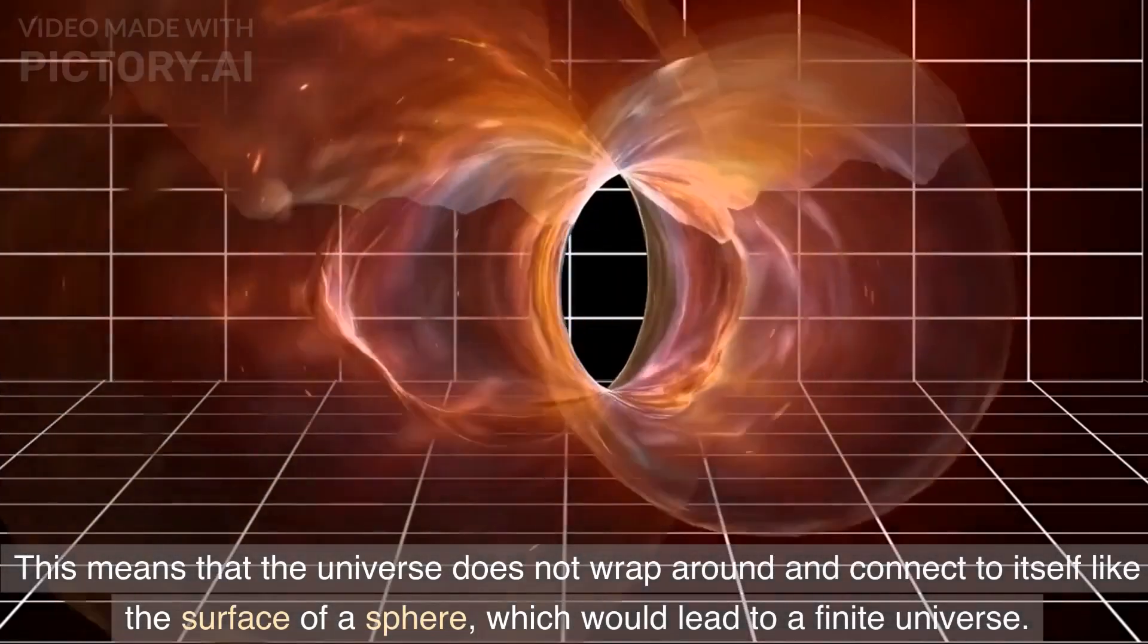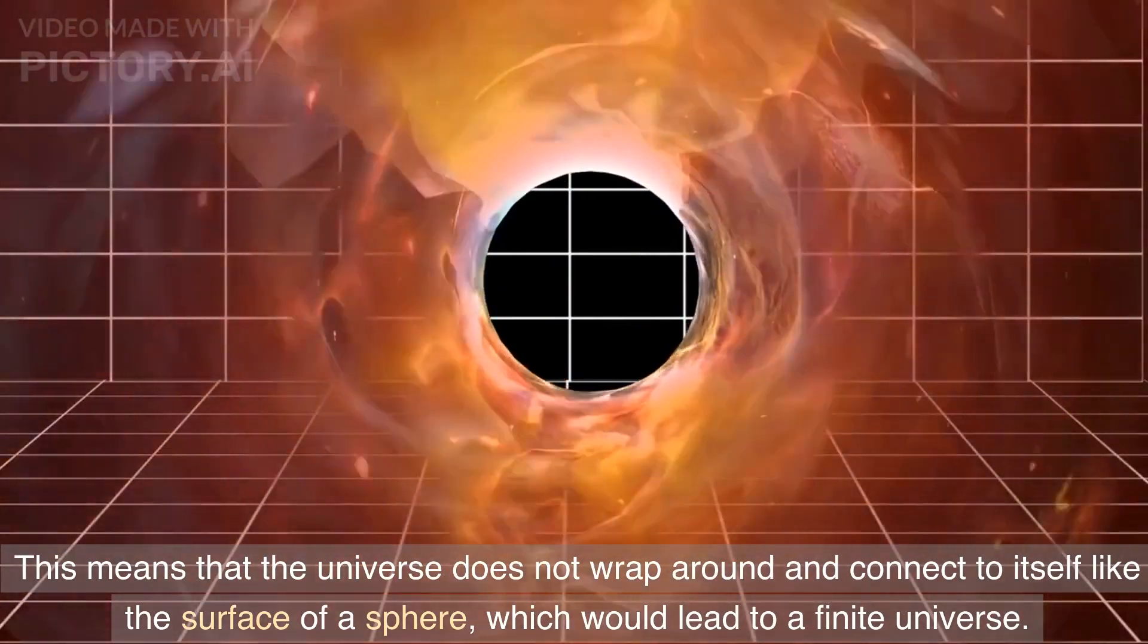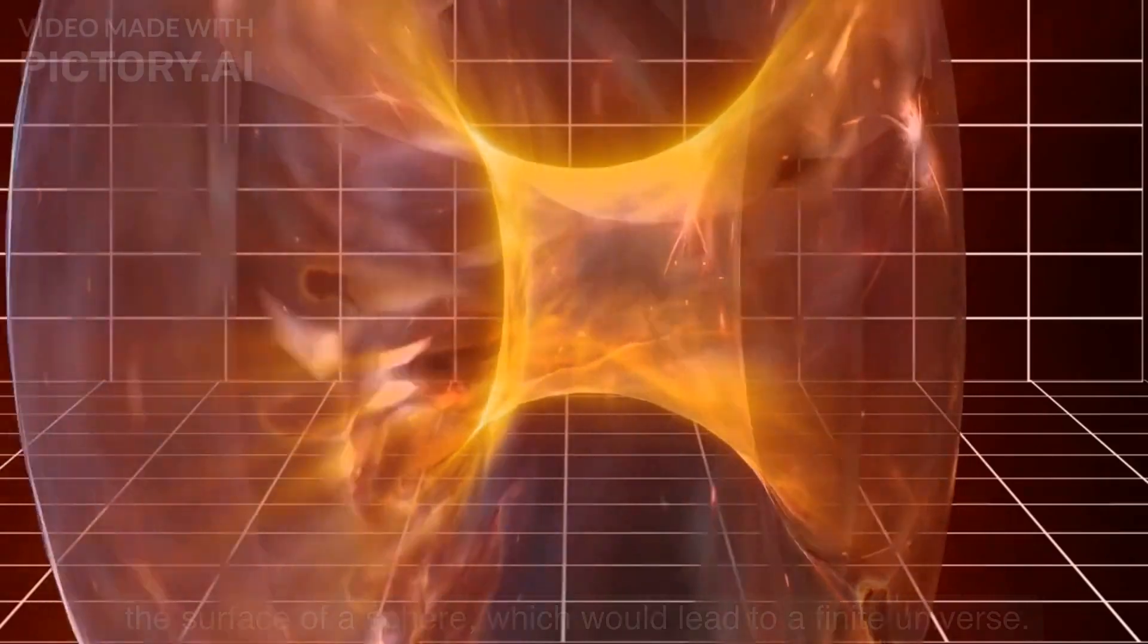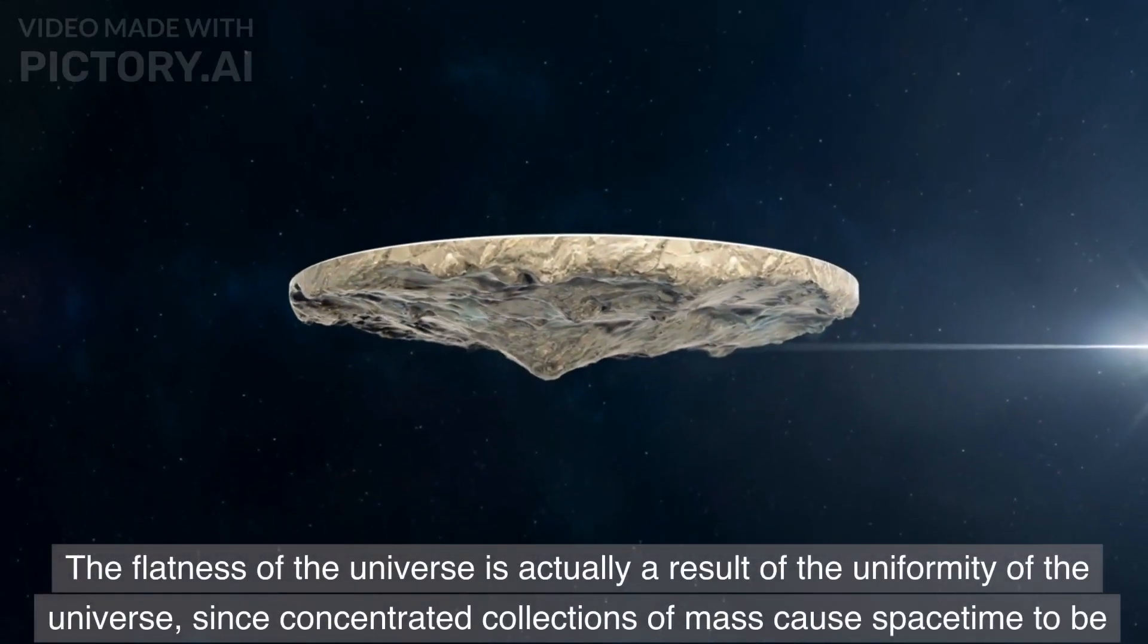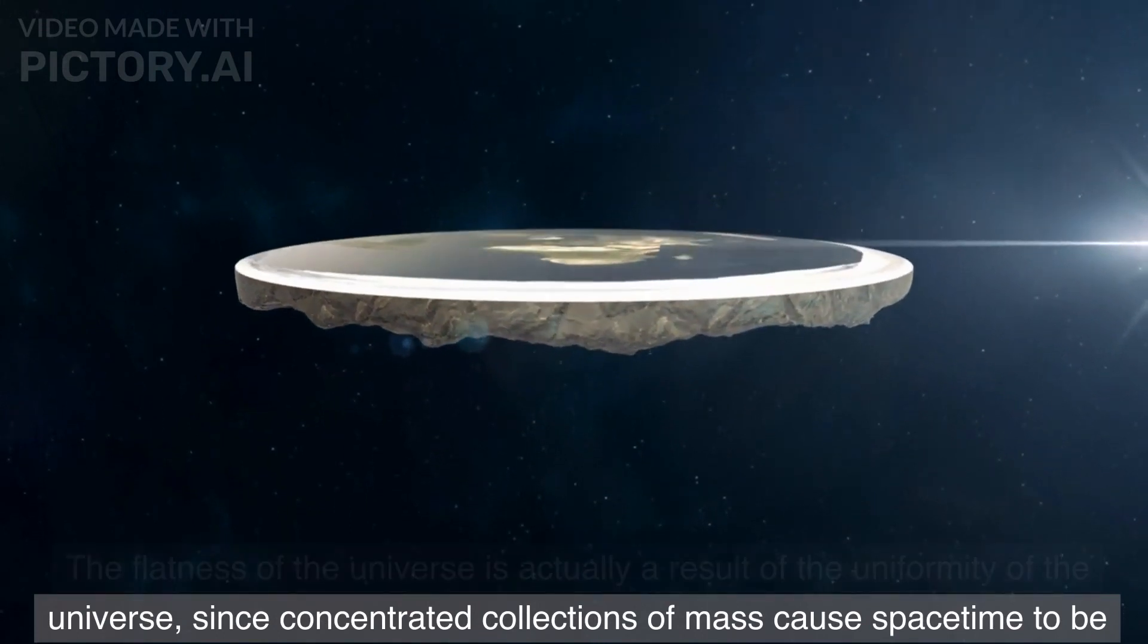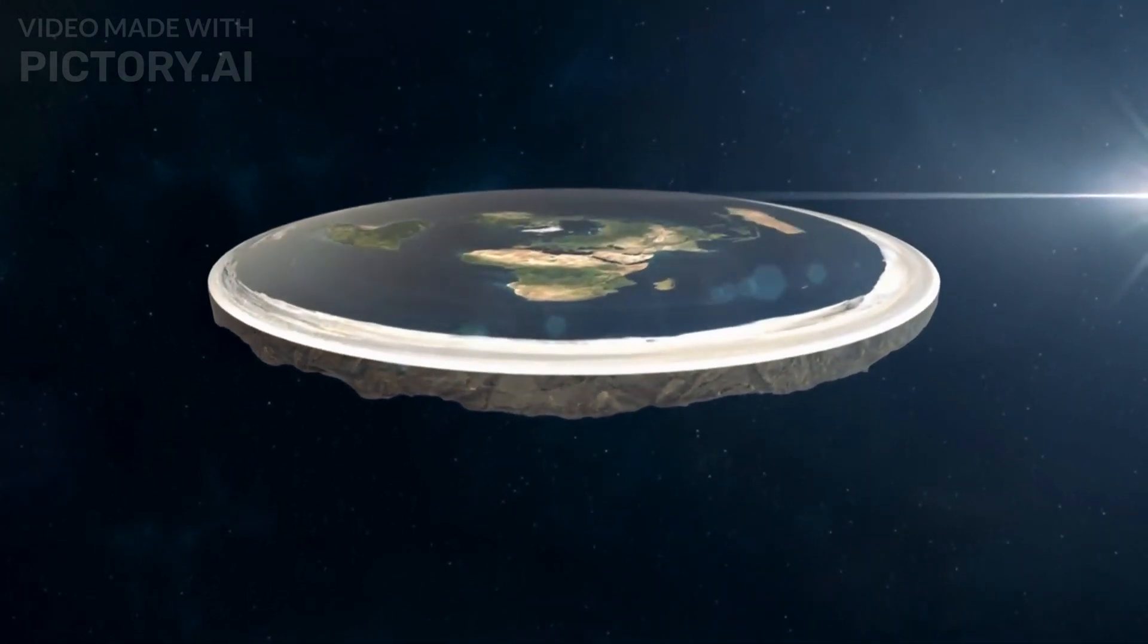This means that the universe does not wrap around and connect to itself like the surface of a sphere, which would lead to a finite universe. The flatness of the universe is actually a result of the uniformity of the universe, since concentrated collections of mass cause spacetime to be curved.